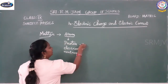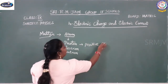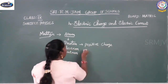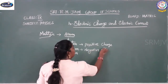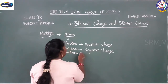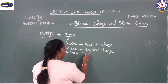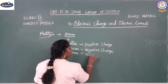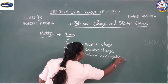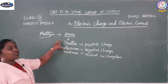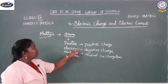By nature, all these particles have charges. Proton carries a positive charge, whereas electron carries a negative charge. The neutron is neutral, or we can say it is chargeless. So by nature, all these particles of an atom have a positive charge, negative charge, and neutral charge.